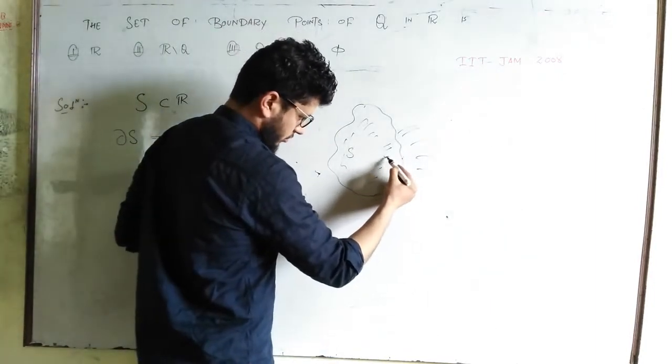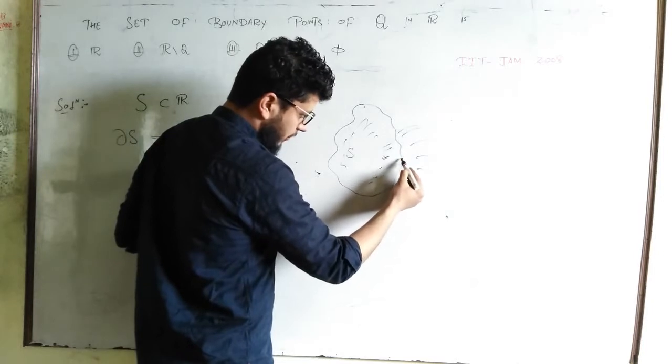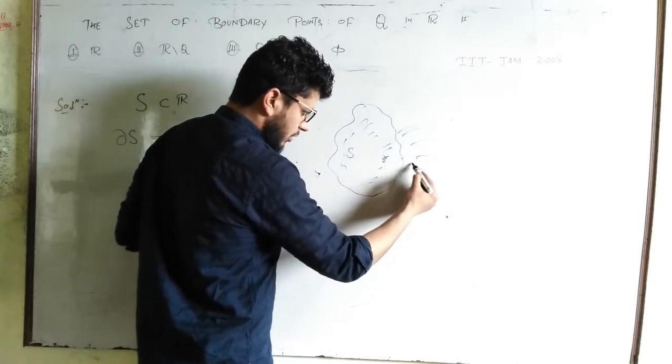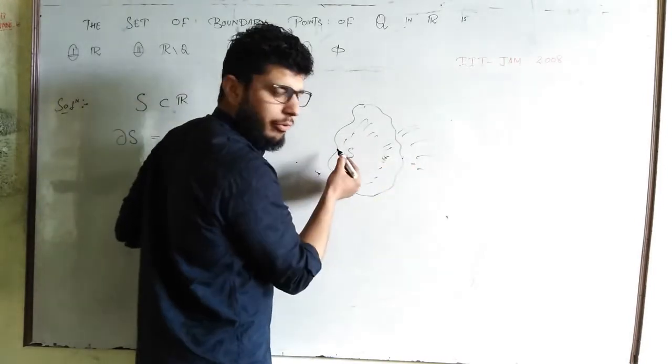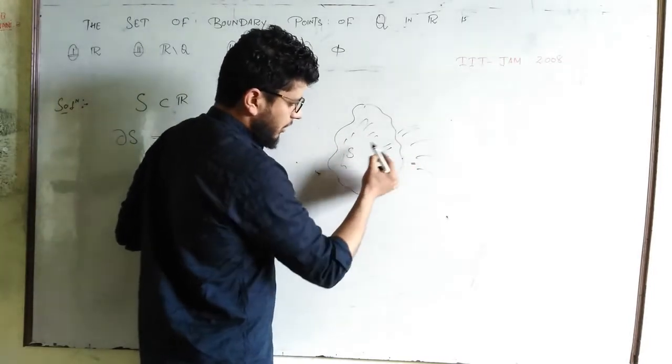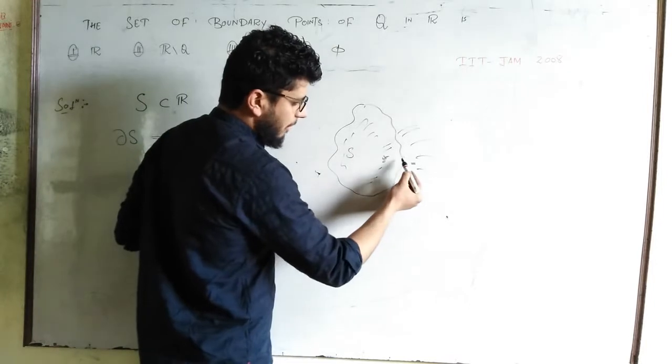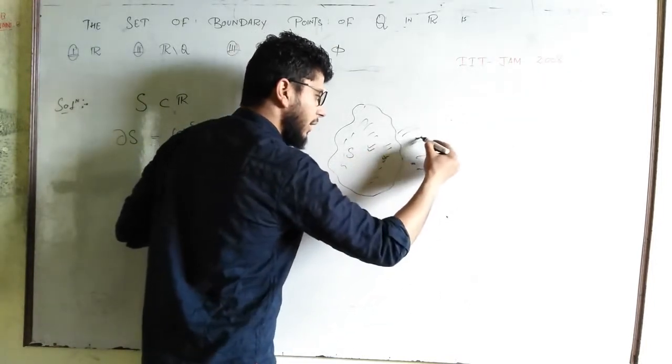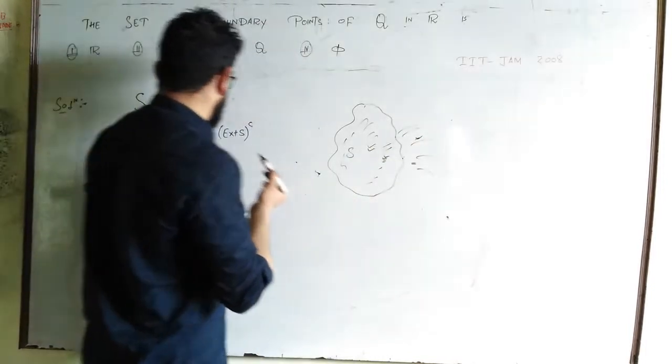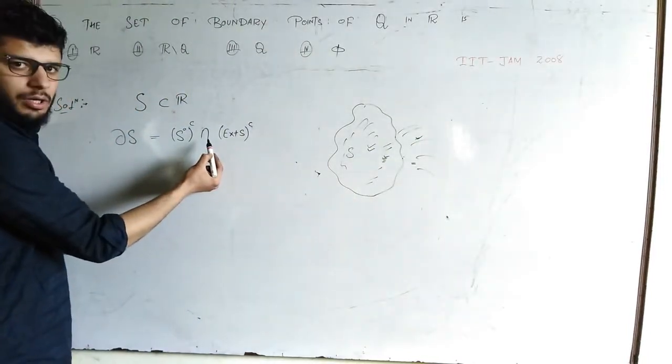Now there are a group of points that is on the boundary. Not the interior points, not the exterior points. The boundary points are on the exact boundary of this set. So you can clearly visualize the boundary points.